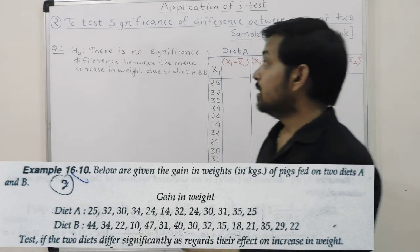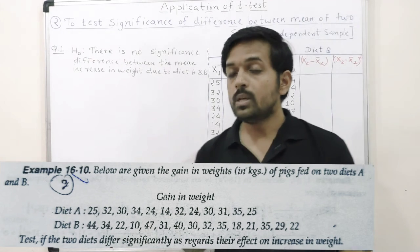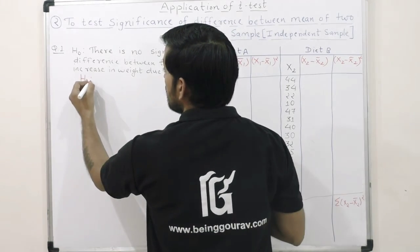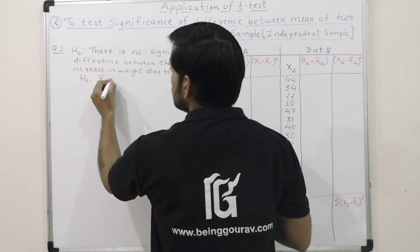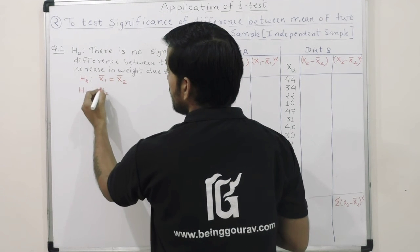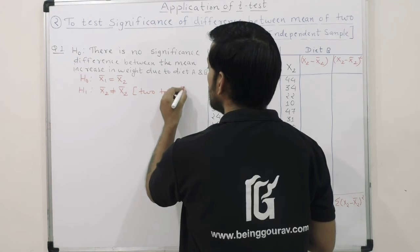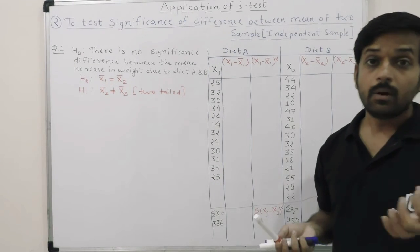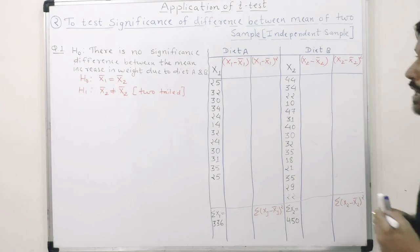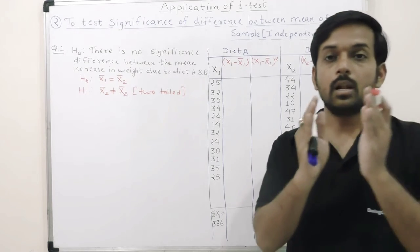The null hypothesis states there is no significant difference between the mean increase in weight due to diet A and diet B — meaning the mean weight gain from both diets is equal. The alternative hypothesis states that the mean weight of both diets is not the same. Since both sample sizes — 12 and 15 — are less than 30, we will use the t-test.